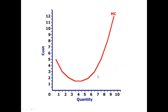This is your MC curve. The MC curve is U-shaped. You can see that MC initially decreases, reaches a minimum point, and then increases again. The reason the MC curve is U-shaped is due to the law of increasing returns, decreasing returns, and the application of the law of variable proportions.